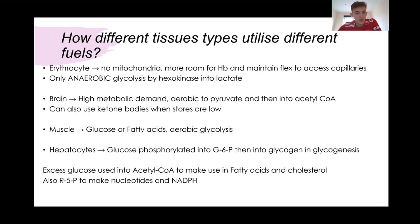If we talk about how different cells use this energy: erythrocytes, so red blood cells, obviously don't have mitochondria because we want to maximize the room for oxygen in the cells to supply our muscles and maintain flexibility to access capillaries. Because they lack mitochondria, they can only go through anaerobic glycolysis and can't go through the whole Krebs cycle, which usually happens in the mitochondria. This produces lactate and then lactic acid, which is why we may get pain after exercise due to that buildup of lactic acid.